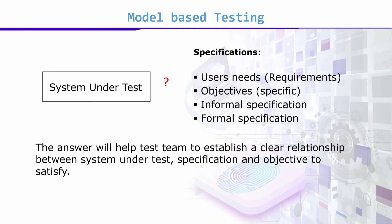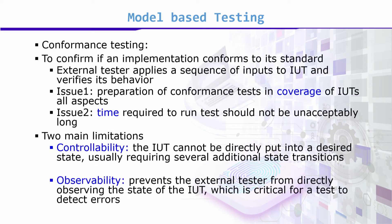Finally, this represents my system — the system under test, or SUT. In conformance testing, we confirm if an implementation conforms to its standard. An external tester applies a sequence of inputs to the implementation under test, which we call the implementation under test or system under test, and verifies its behavior. The interest is in behavioral testing — testing behavioral aspects.